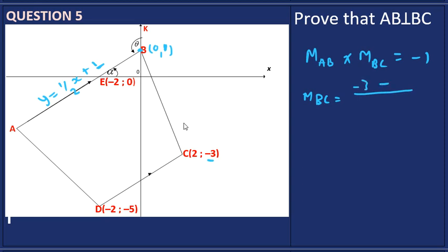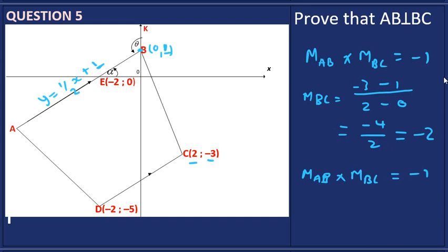The gradient of BC is: minus three minus one over two minus zero, which gives minus four over two, simplifying to negative two. If we multiply the gradient of AB (which is a half) by the gradient of BC (which is negative two), we get negative one. Therefore, line AB is perpendicular to line BC.